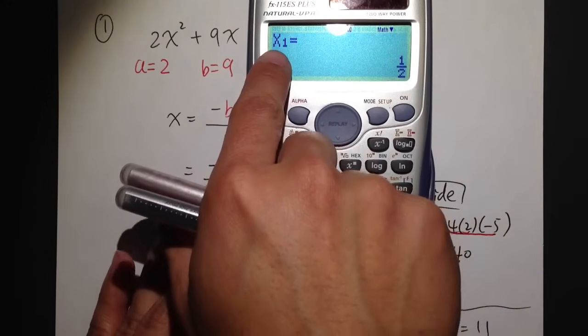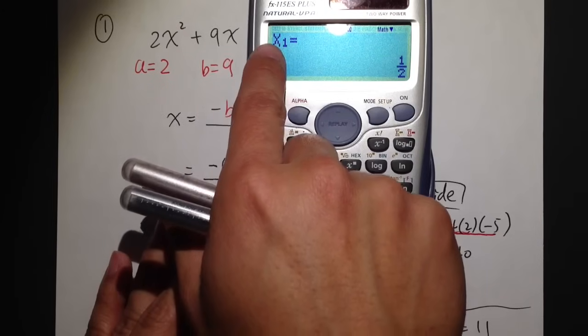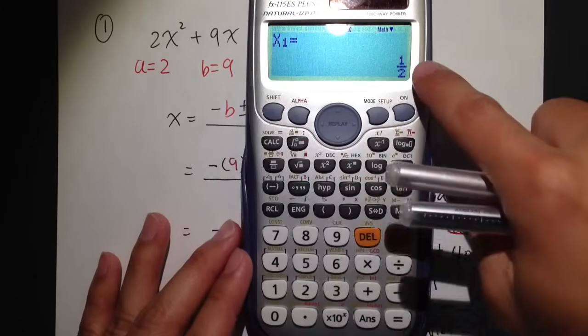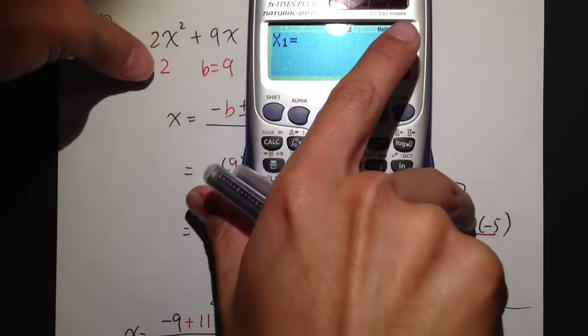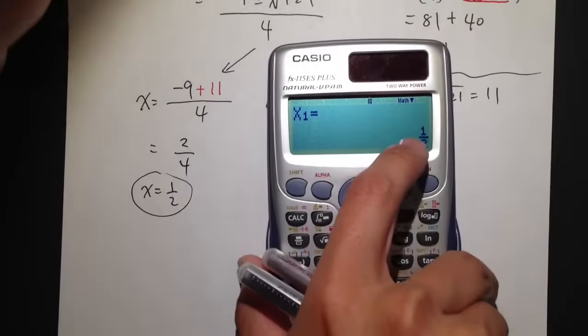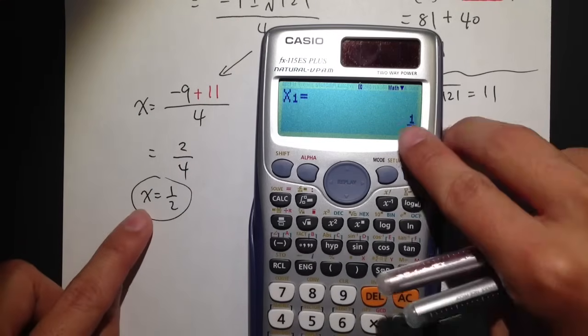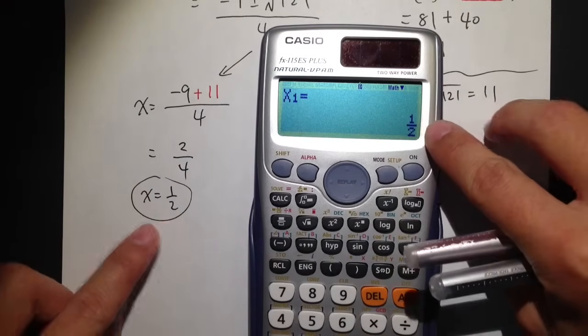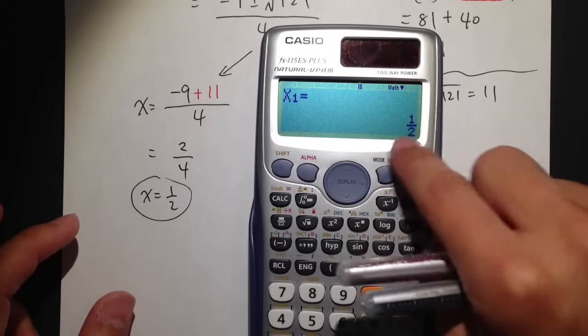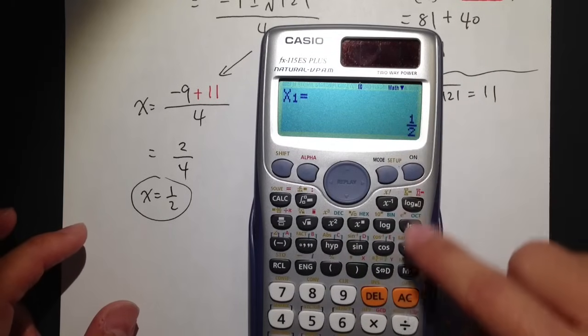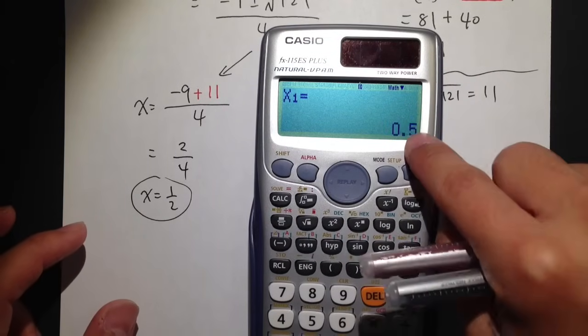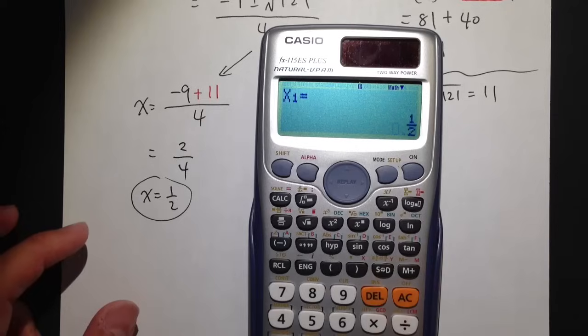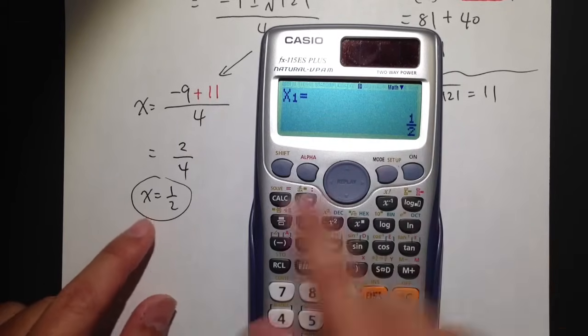And as you can see, it shows us x1. The first solution is equal to 1 half, and I think that's exactly what we got earlier as well. The first solution is x is equal to 1 half. Notice that this calculator gives you a fraction answer. If you don't want fraction, you can also hit S to D to get decimals. But the first answer is 1 half. We got it.